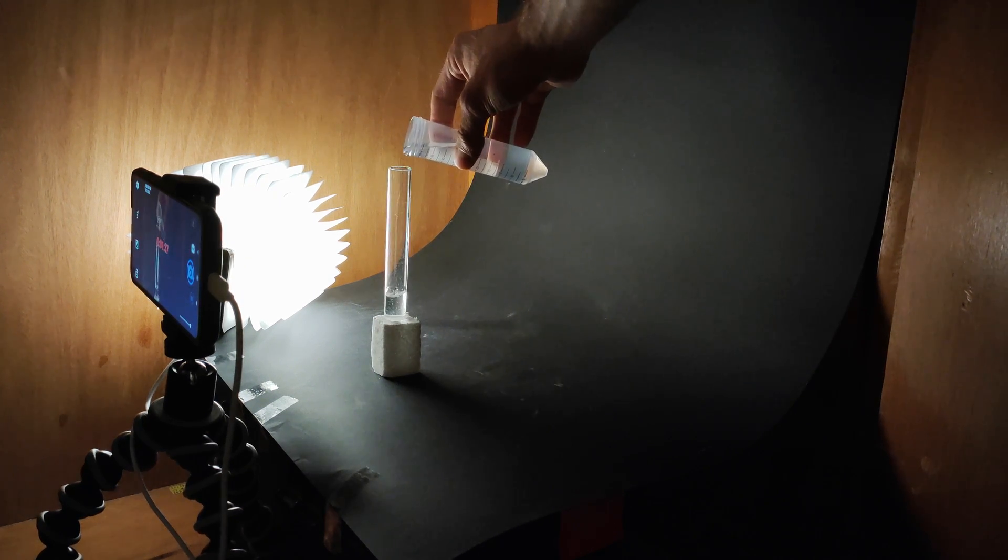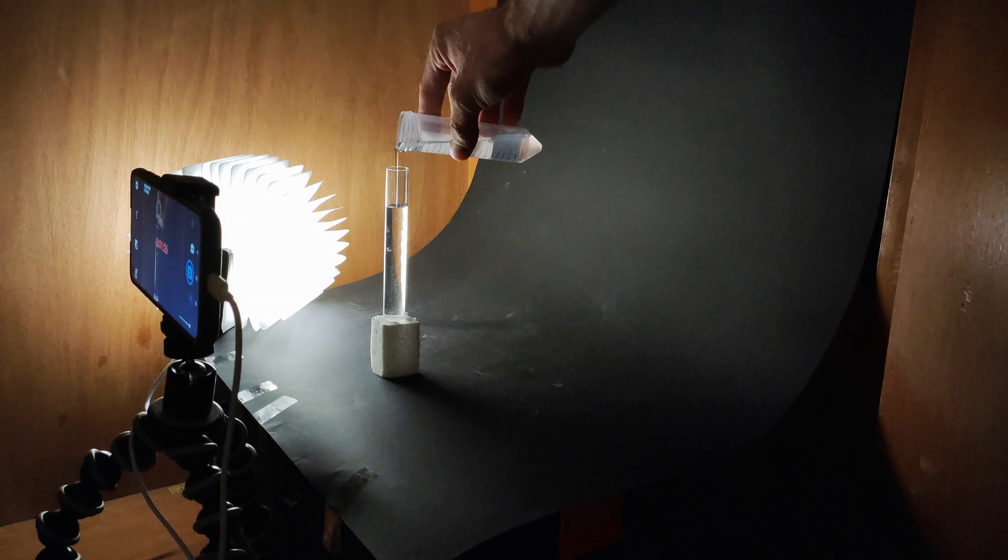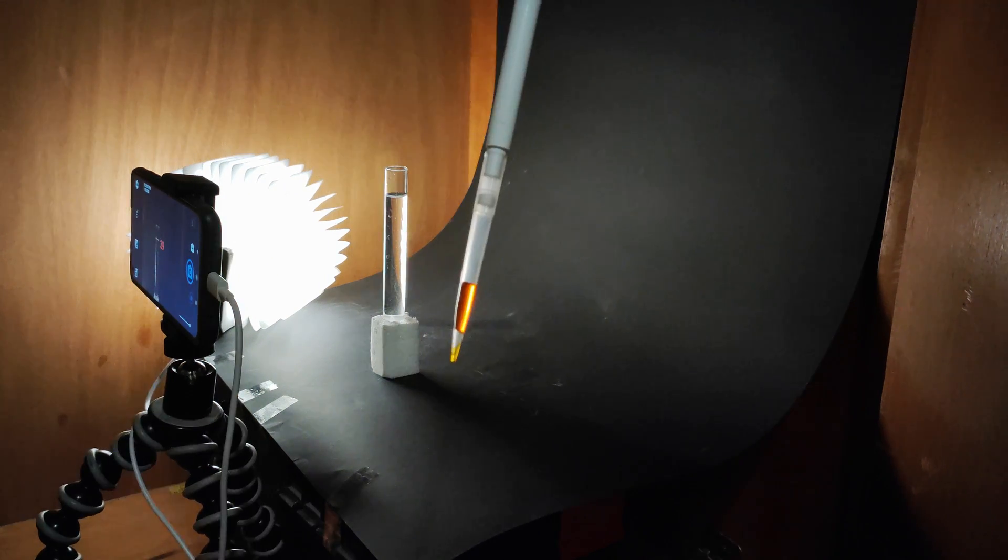Next, we need to make sure that when we inject the dye, it won't cause swirls right from the start. To avoid that, I added salt to the water instead of using just tap water. Salt water is slightly heavier than the dye, so when we inject the dye, it immediately floats to the top.